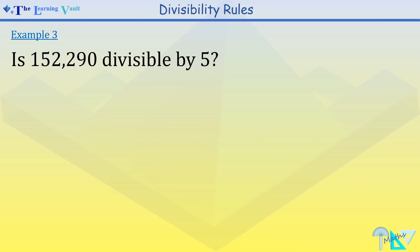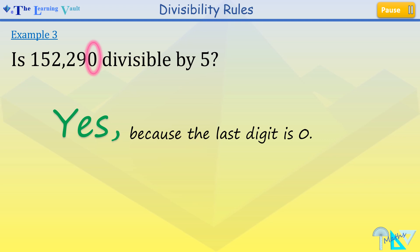Final example. You may pause and have a go. Is 152,290 divisible by 5? Yes, because it ends with a 0.